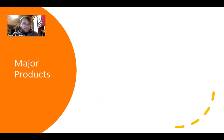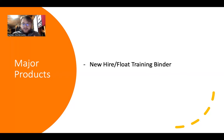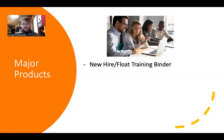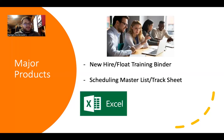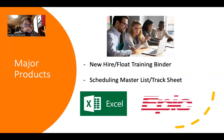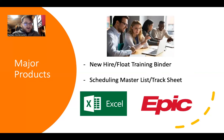The two major products I worked on during this APE were as follows. I made a new hire float training binder, creating new materials and updating the old one, including updating our contact lists. The other major one was bringing a scheduling master list tracking sheet to track work queues and patients who hadn't been scheduled yet, as well as wait lists. I did that through Excel, converting it from the work queues used in Epic, which lack accessibility options and personalization and are harder to read.